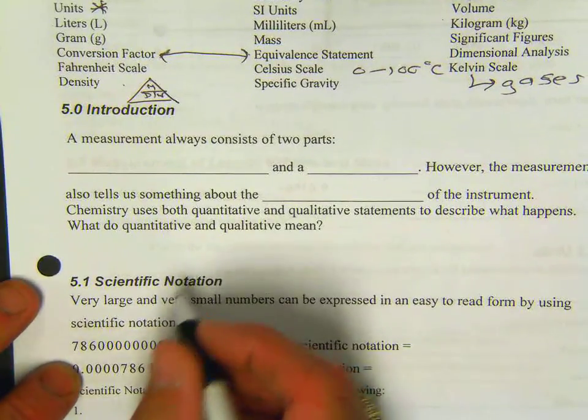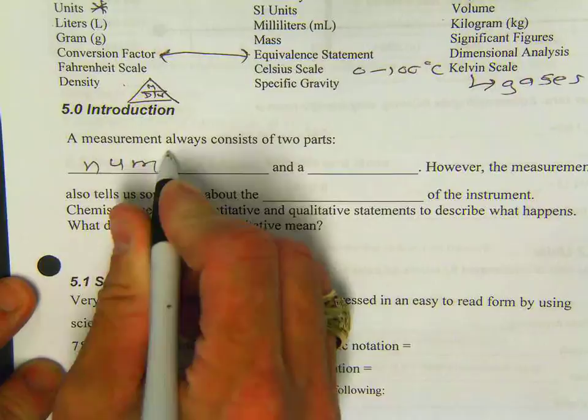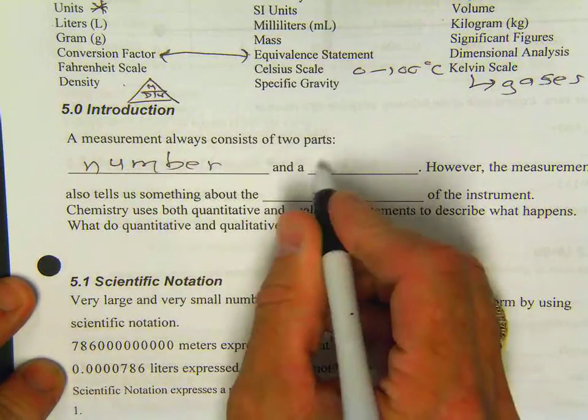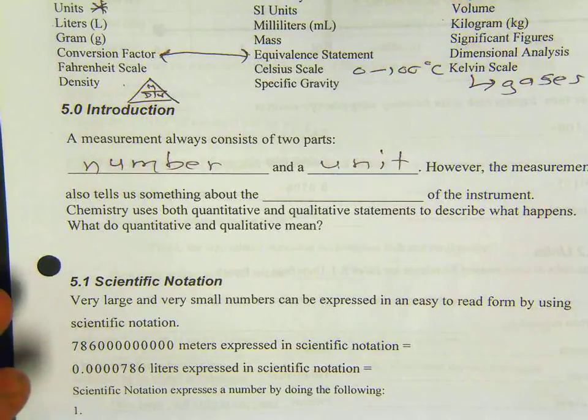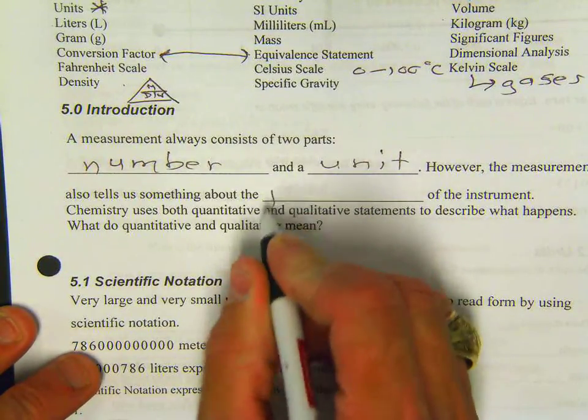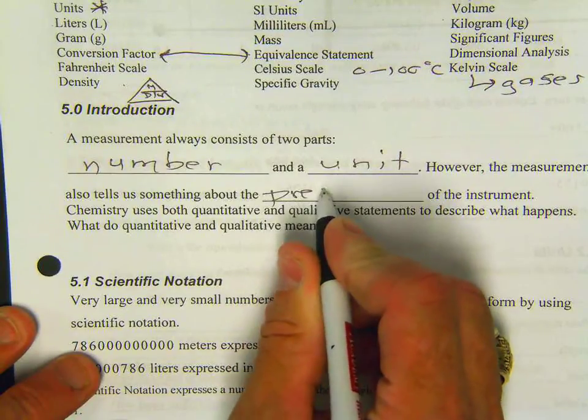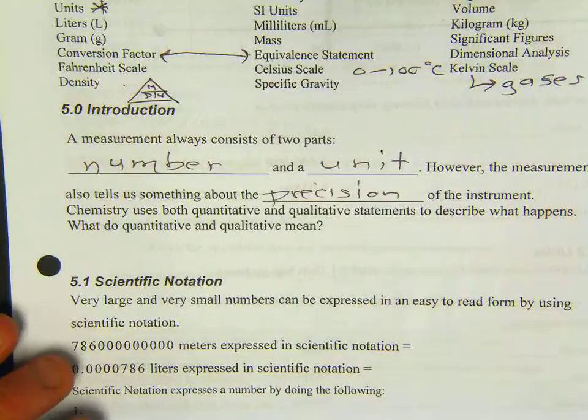A measurement always consists of two parts. The first is a number, and the second is a unit. So always get in that habit, the number and the unit. It also tells us something about the precision of an instrument.